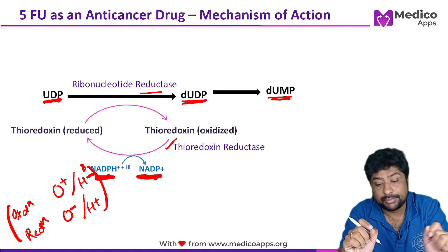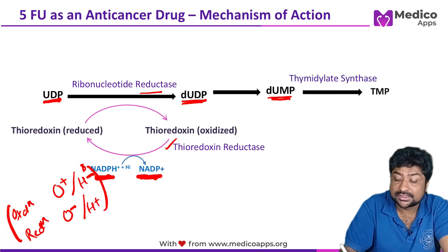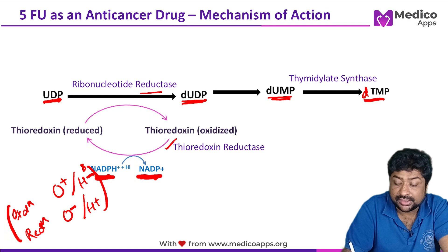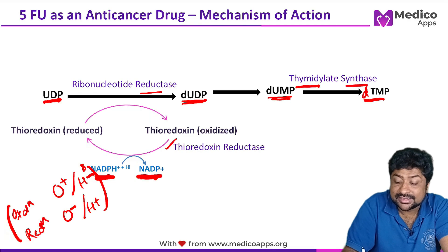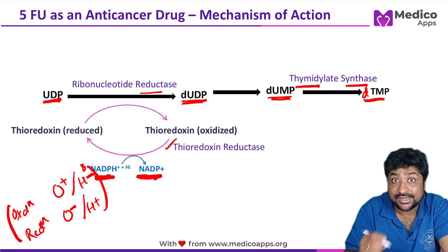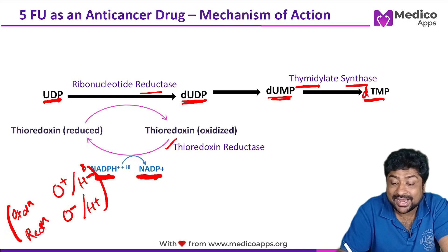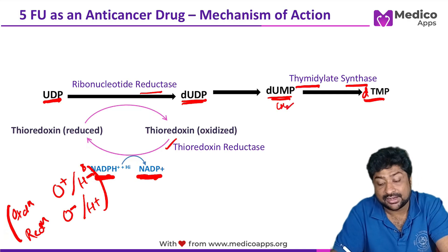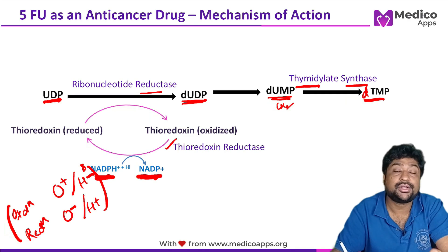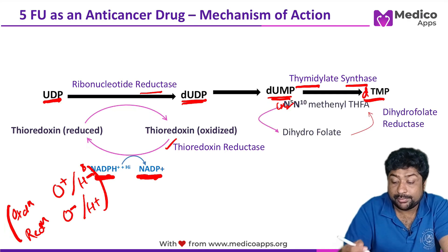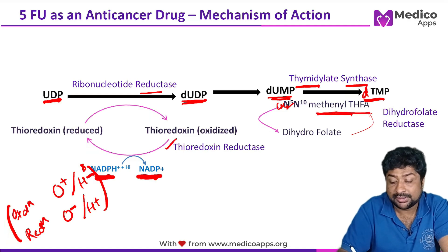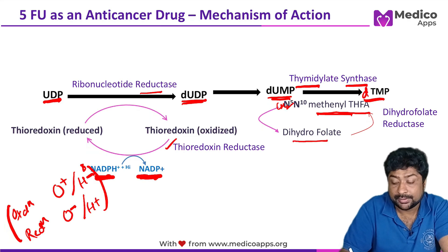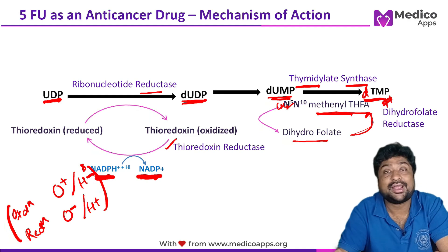The next reaction deserves all your focus — it has so many exam questions. dUMP is converted into deoxythymidine monophosphate (dTMP), and the enzyme here is thymidylate synthase. What happens at the molecular level is that one methylene group is added to uridine to convert it into thymidine. The methylene donor is methylene tetrahydrofolic acid, which gets converted into dihydrofolate in the process.